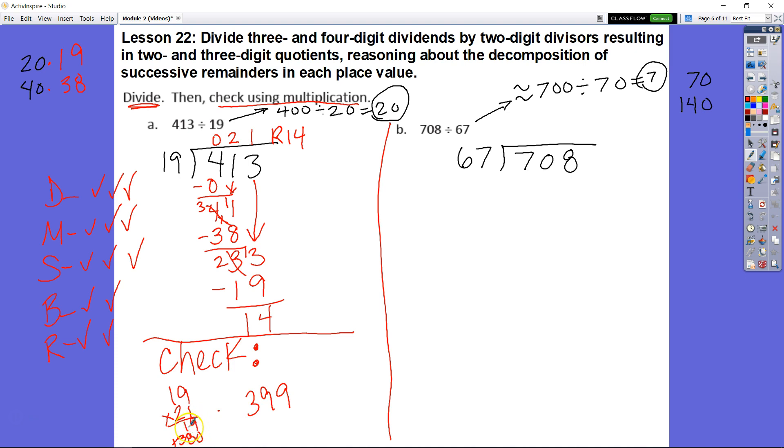I just added 9 plus 0, 8 tens plus 1 ten equals 9 tens and then 3 hundreds. So now if I add this to my remainder, 9 plus 4 is 13. Regroup my 1. I get 10, 11 and then regroup my 1. And I have 4. So 413 is my dividend. And I know that's correct.